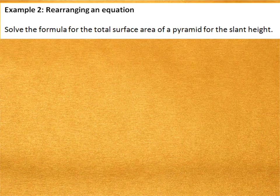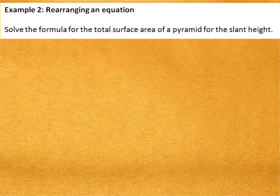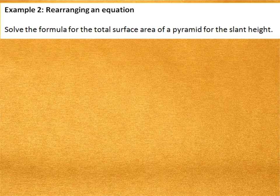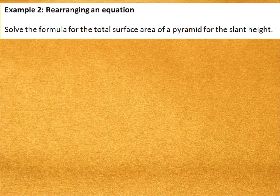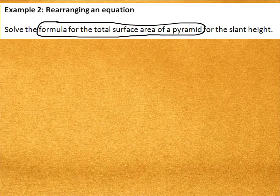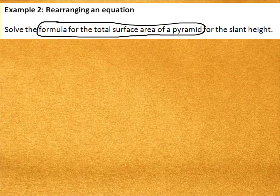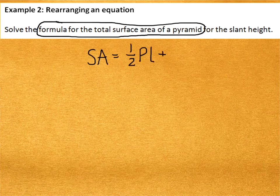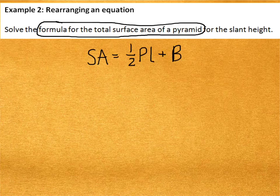In this second example, we'll be rearranging one of our surface area or volume formulas to be solved for a specific variable. The question is asking us to solve the formula for the total surface area of a pyramid for the slant height. Okay? That may have just sounded like I told you to do a bunch of gibberish. So, let me help you piece it together. So, we're looking at the formula for the total surface area of a pyramid. Okay? So, we can look that up. That is, SA = 1/2 PL + B.